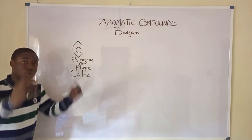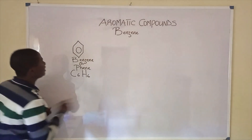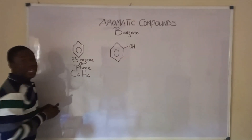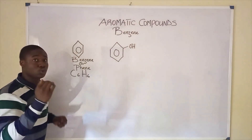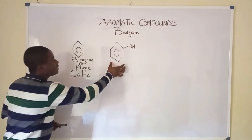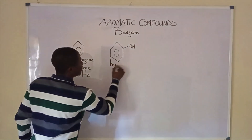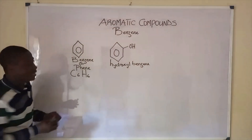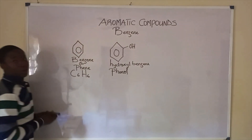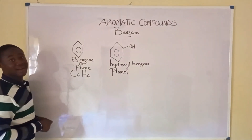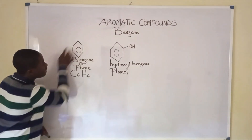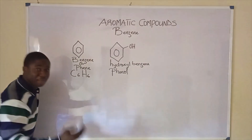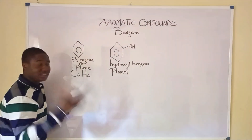I'll be showing us different structures and derivatives formed from benzene. This is the benzene structure attached to an OH group, called the hydroxyl group. This compound is called hydroxyl benzene, but commonly it is called phenol. Phenol is a benzene derivative which is used as a disinfectant. An OH group attached to benzene gives phenol, also called hydroxyl benzene.